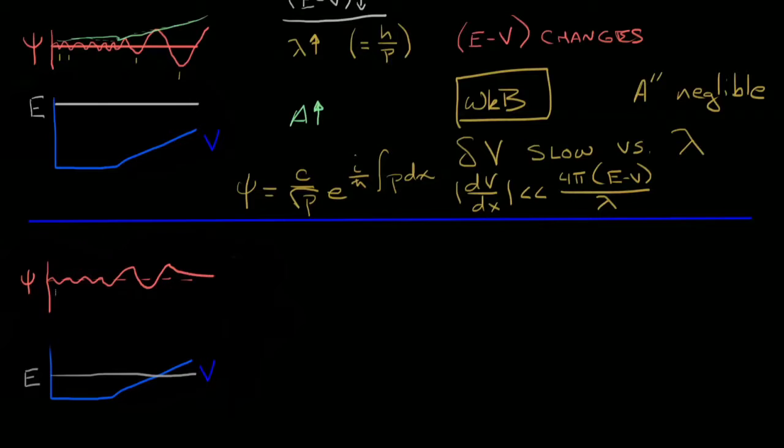We know that we're going to have small wavelengths where e minus v is large with increasing wavelengths until the point when e equals v, at which point we'll transition from a sinusoidal function to an exponentially decreasing function.